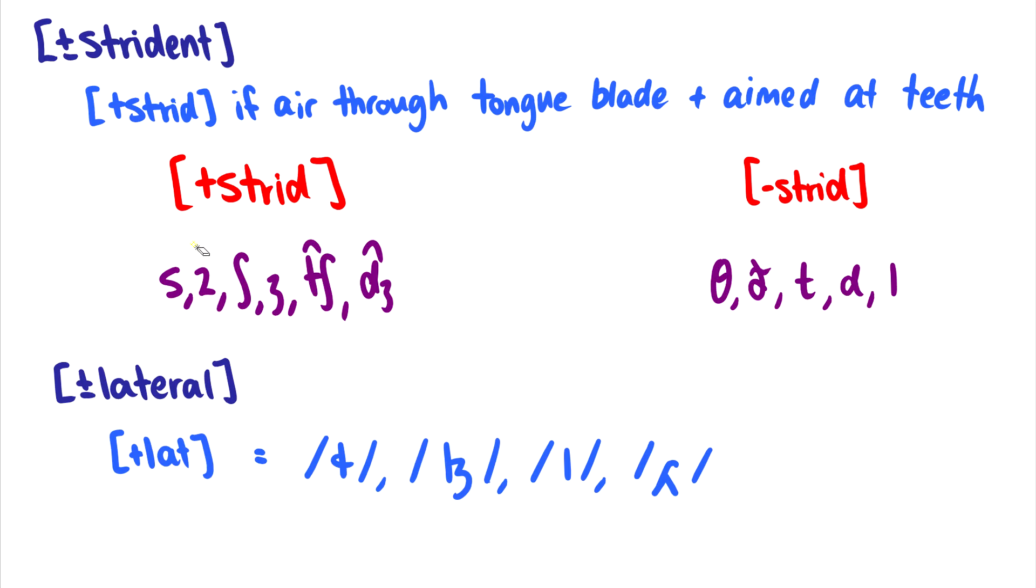Now the minus strident, which you may hear a difference, things like th, well, the air isn't going through the tongue blade and aimed at the teeth, because it's going through the teeth. In t and d, this is made with the tip. So of course, well, I know s and z are going with the tip as well, but air is flowing through the tongue blade. In t and d, it's just a release that's being made. And in l, air is not going at the teeth, it's going around the tongue. So again, these are minus strident sounds.